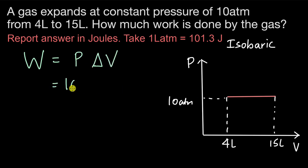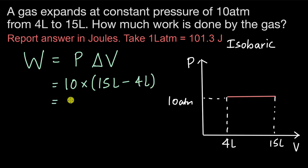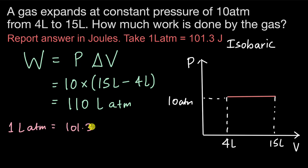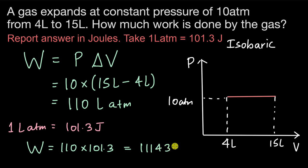Here P is 10 atm and ΔV is going from 4 to 15, so that is 15 liters minus 4 liters. This comes out to be equal to 110 liter·atmospheres, because 15 minus 4 is 11. We need to represent the answer in joules, and we know that one liter·atmosphere equals 101.3 joules. So we multiply 110 by 101.3 to get the answer in joules, which comes out to be 11,143 joules.